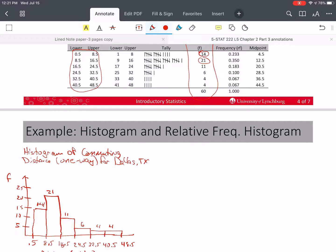If I'm going to compare this or standardize it, I'm going to make it a relative frequency histogram. So let's call it a relative frequency histogram of one way commute distance in Dallas, Texas.